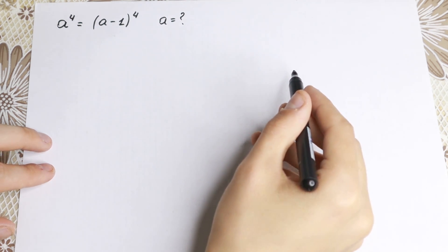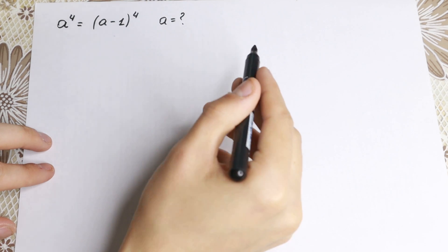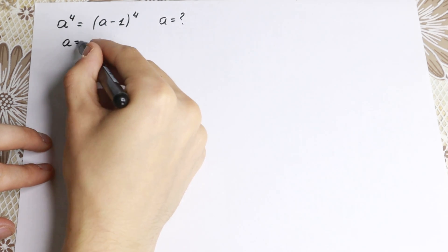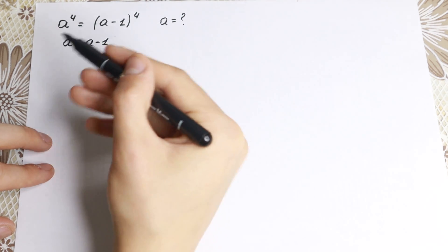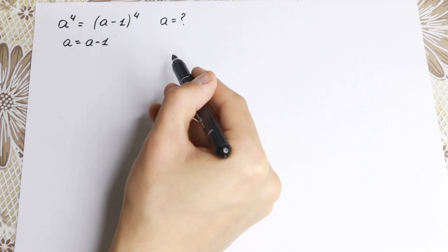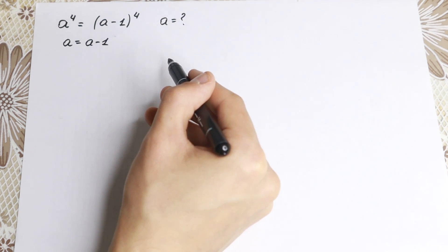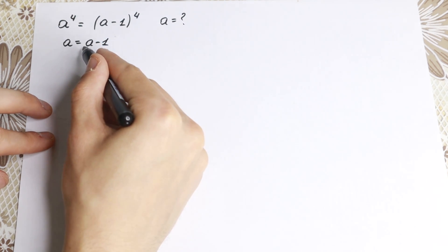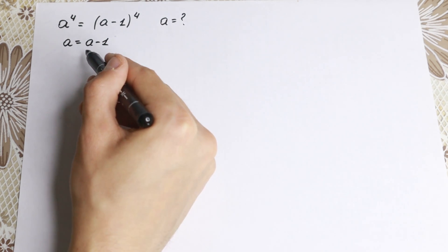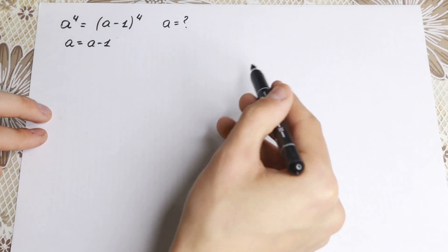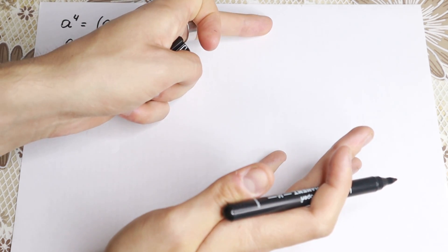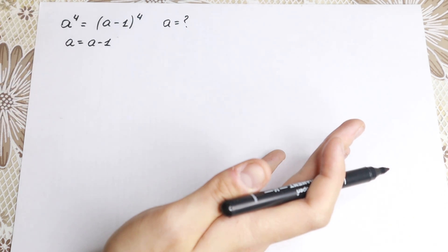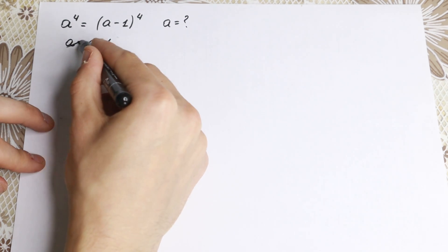A lot of students ask why we cannot just take the fourth root on both sides. If we do that, we get a equal to a minus one, but they forgot about absolute value. This is not a good approach because with a fourth-power equation we may have complex roots, and taking the fourth root directly does not give a general solution — we cannot solve a fourth-degree equation in one line.